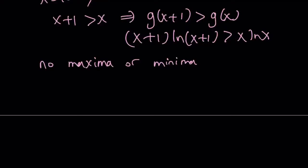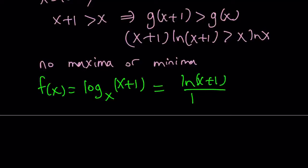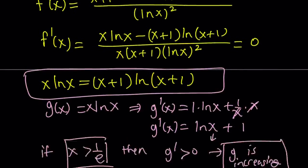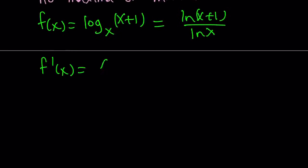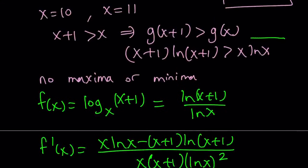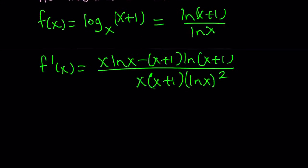Let's go back to f. Recall f(x) = ln(x+1)/ln(x), and f'(x) = [x·ln(x) − (x+1)·ln(x+1)] divided by [x(x+1)·(ln x)²]. Since there is no maxima or minima, and we know that x·ln(x) is always less than (x+1)·ln(x+1), the numerator is always negative. The denominator is always positive because of the square. Therefore, f'(x) is always negative.